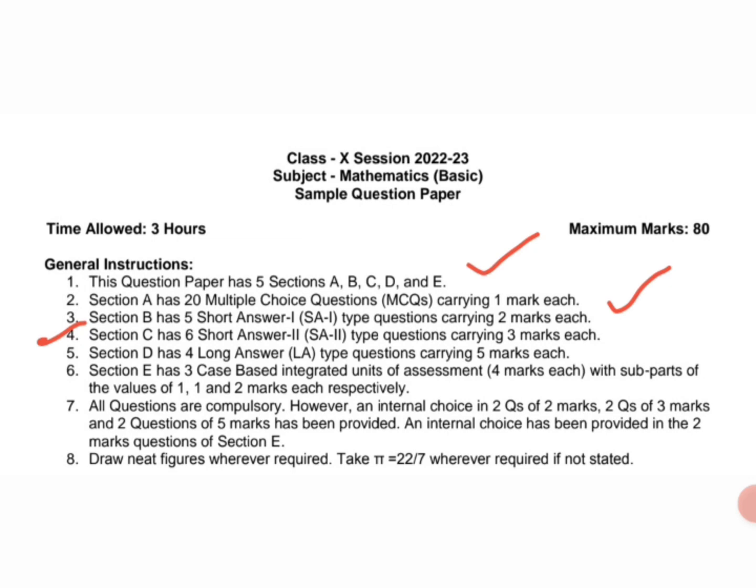Section C has six short answer SA-2 type questions carrying three marks each. Section D has four long answer LA type questions carrying five marks each. And Section E has three case based integrated unit of assessment four marks each with sub-parts.